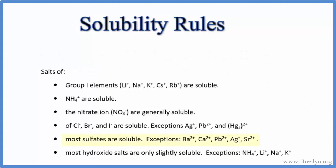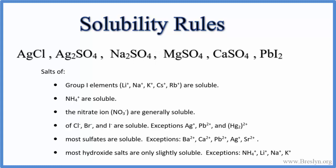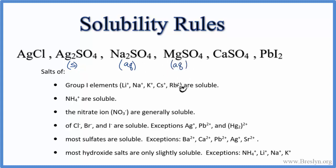Rule 5: most sulfates are soluble. Sulfate is SO4 2-. If it has SO4 2-, it's probably going to be soluble, except for these exceptions: lead, silver, barium, calcium, and strontium. When attached to a sulfate, those won't be soluble. Pause and give these a try. Silver sulfate has sulfate but is attached to silver, so it's insoluble — write S for solid. Sodium sulfate is aqueous. Magnesium sulfate is aqueous. Calcium sulfate is one of the exceptions — it'll be a solid. And of course lead(II) iodide and silver chloride are insoluble solids.